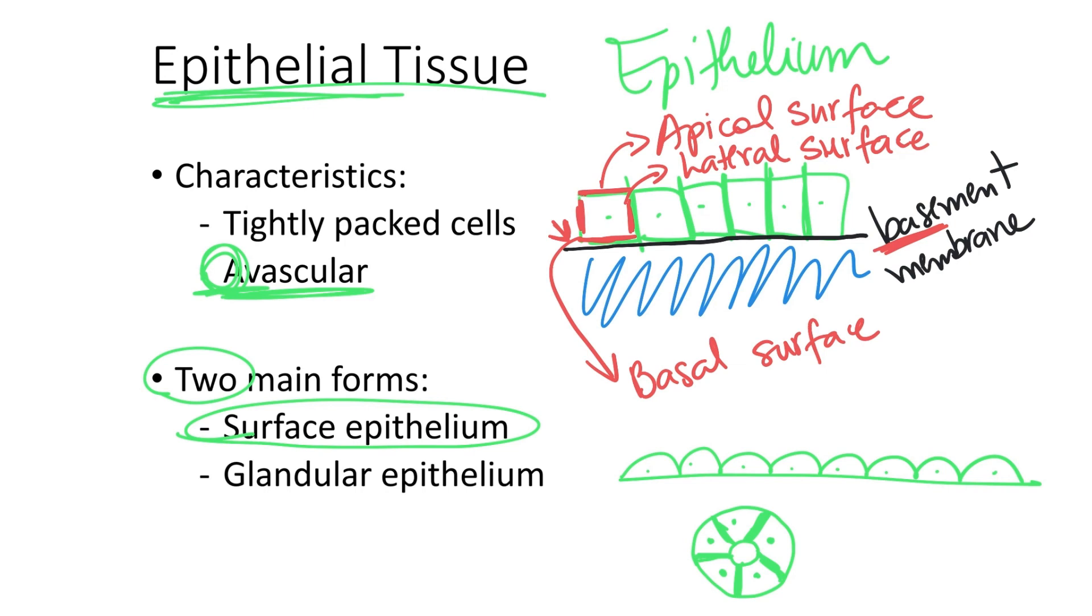Consequently, this is epithelial tissue. When we have epithelial cells making up the secreting portion of a gland, we call it glandular epithelium.